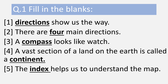Fill in the blanks. First one: directions show us the way. Second: there are 4 main directions. Number 3: a compass looks like a watch. Number 4: a vast section of land on the earth is called a continent. Number 5: the index helps us to understand the map.